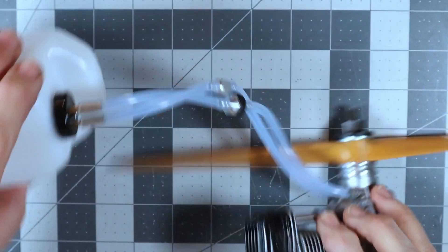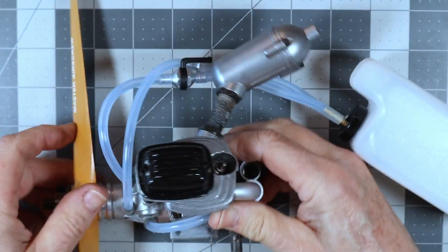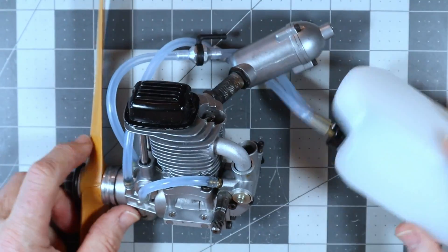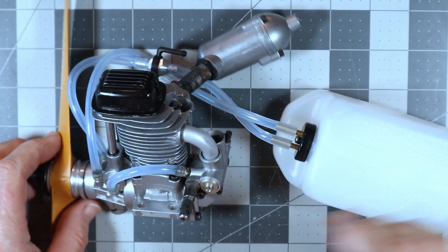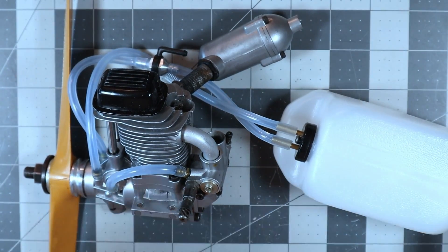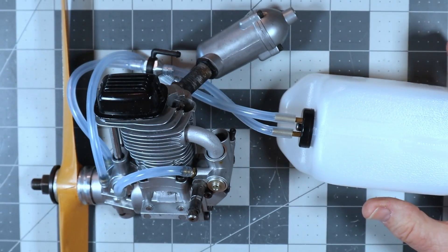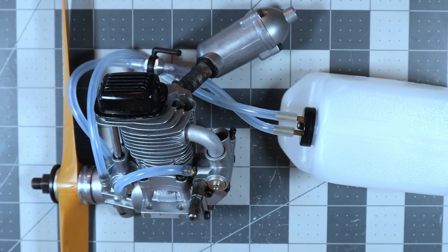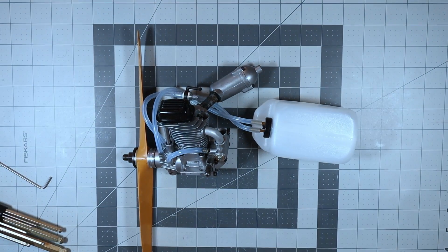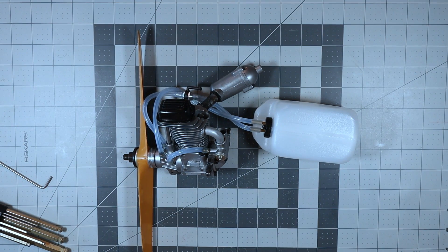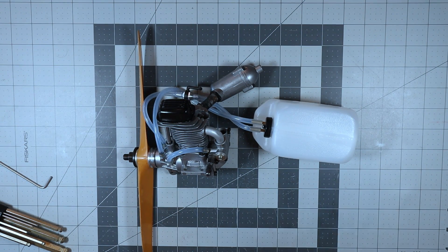So anyway, that turned out to be a quick look inside. But what it really was, was just a little bit of show and tell about how I set up this fuel system plumbing for this YS FZ63 engine. And the next time you see this engine on this channel, hopefully that propeller will be spinning at a rather high RPM.